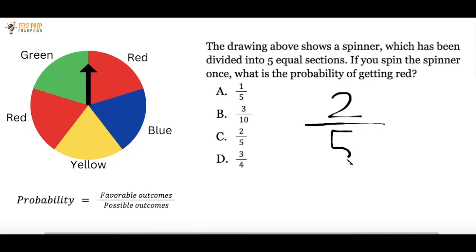So you would do two over five, and C is the correct answer here.